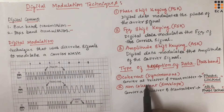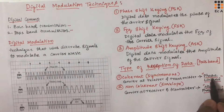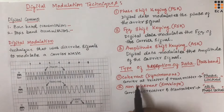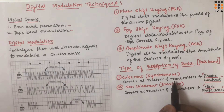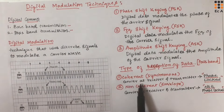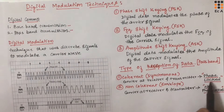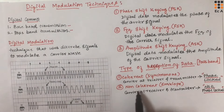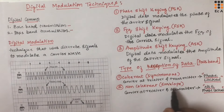In coherent detection method, the local carrier generated at the receiver and the carrier signal at the transmitter will be phase locked. Phase lock means the frequency of oscillation of the carrier at the receiver will constantly adjust to match with the frequency of the carrier at the transmitter. Such a process is known as phase lock. So in coherent detection, the carrier at the receiver and the carrier signal at the transmitter are phase locked. In non-coherent detection, the local carrier at the receiver and the carrier at the transmitter are not phase locked. Such type of detection is also known as envelope detection.